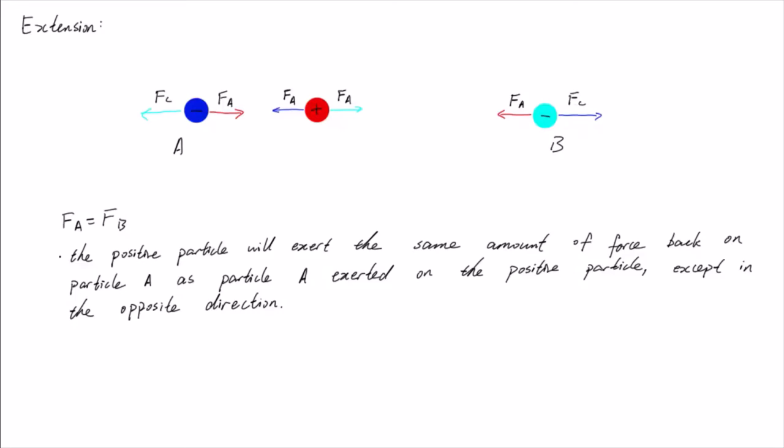In part B of the question, we were trying to find the value QP must take such that FA equals FC. This gives us a net force of zero acting on particle A. But at the same time, it also gives a net force of zero acting on particle B.